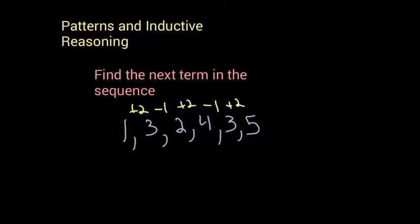So we've established a pattern of plus two minus one. So the last thing we did was plus two, so the next one we do is minus one, so our next term, five minus one, would be four.